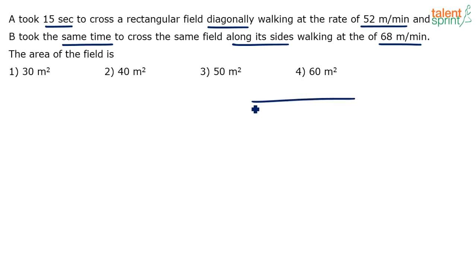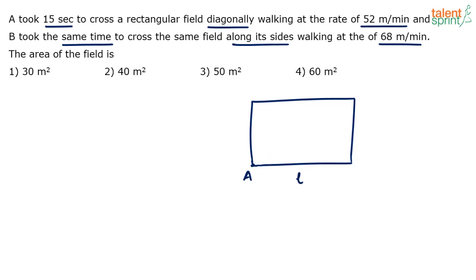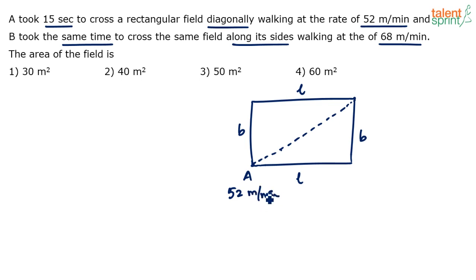Let's consider a rectangular field. You don't have to do all this in the exam but for the sake of explanation I'll draw it. So let's say A is standing at one point. His objective is to cross this rectangular field diagonally. In a rectangle the opposite sides are equal — these are the two lengths and here are the breadths. A crosses it diagonally and has reached the opposite destination. How much time does it take? 15 seconds. A has taken 15 seconds and A's speed is 52 meters per minute.